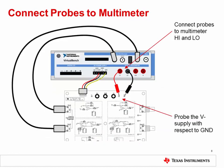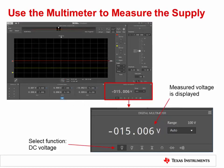Let's now measure the power supply that we just configured. To do this, we'll use the built-in multimeter. Connect the included probes to the high and low inputs on the multimeter. Probe the V minus supply with respect to ground by touching the red probe to V minus and the black probe to ground. In the software, select the DC voltage function of the multimeter at the bottom right. The measured voltage will now be displayed in the large white text — it should read minus 15 volts, the same as what was configured.